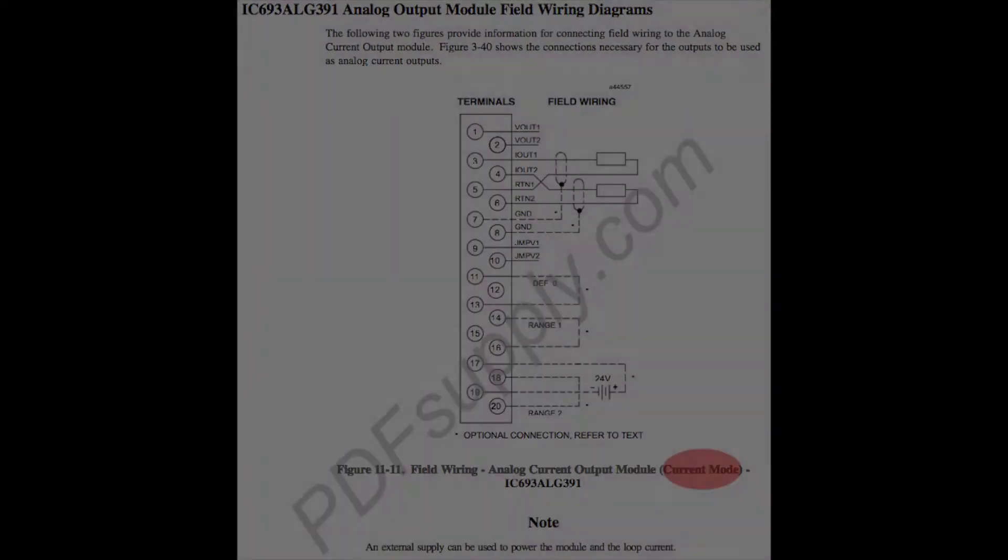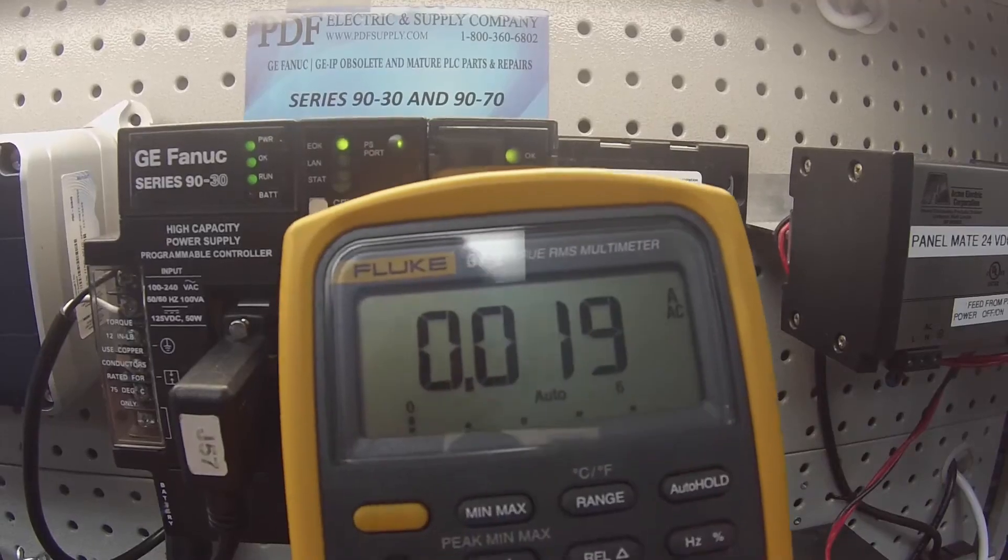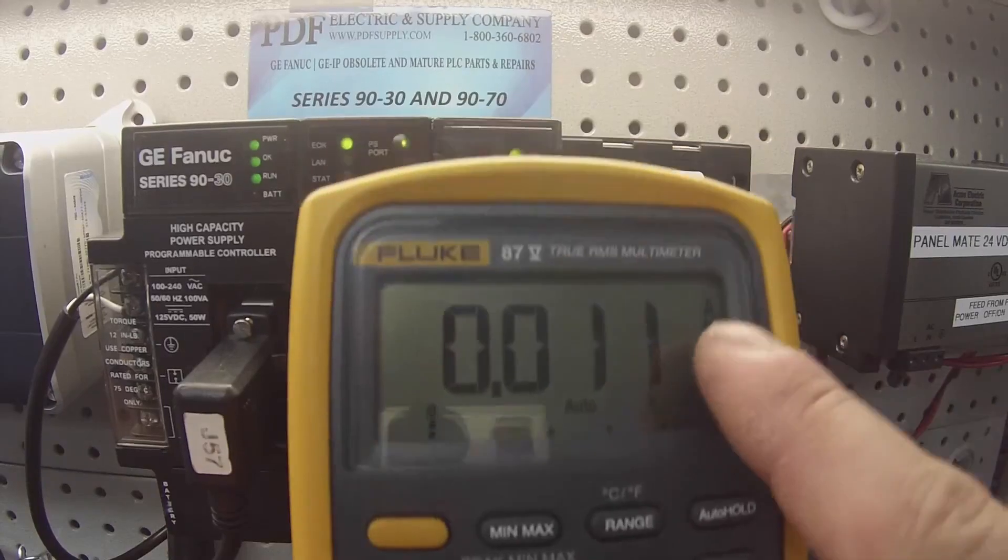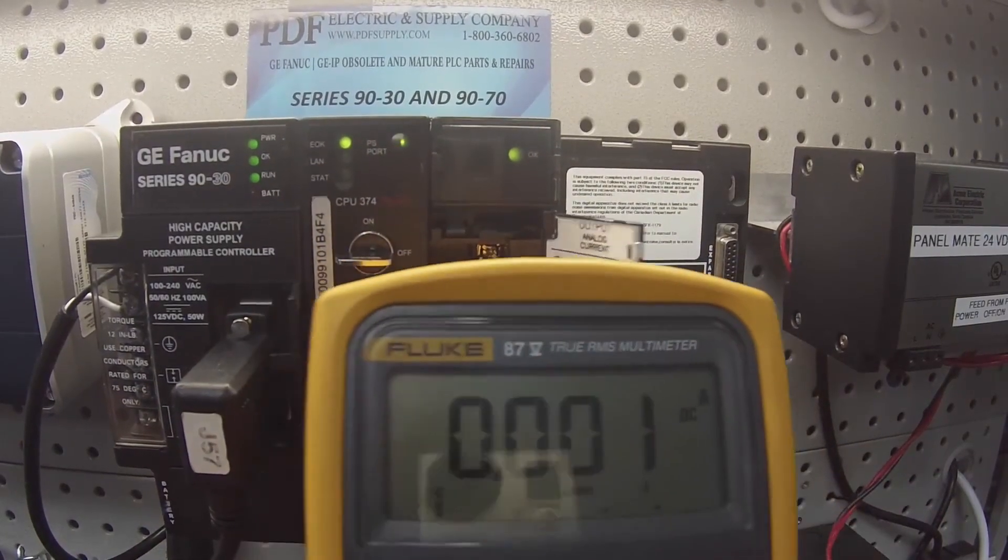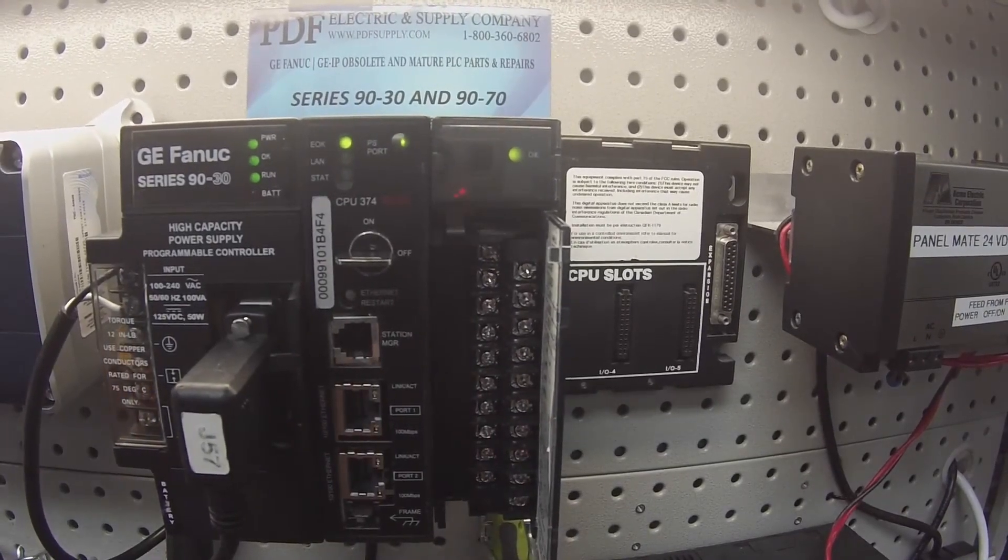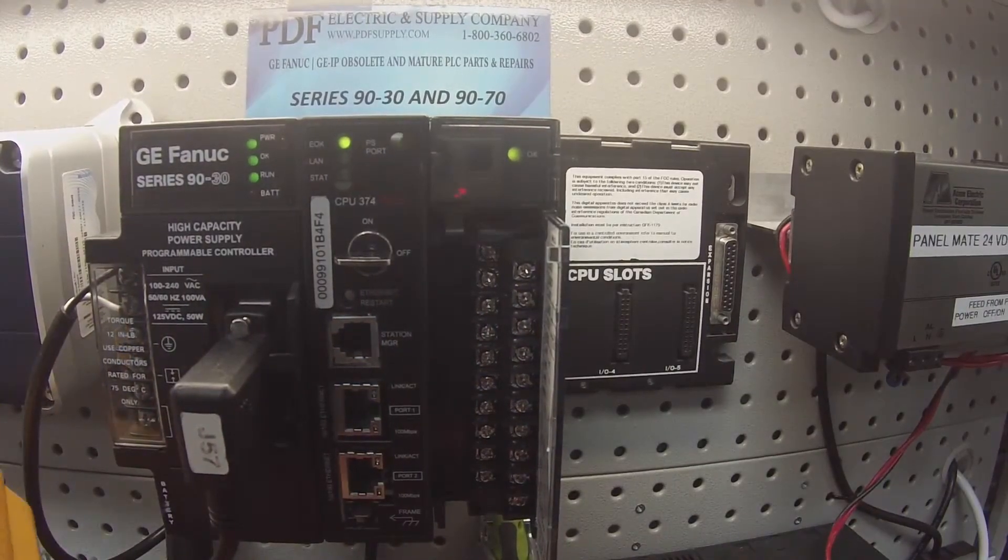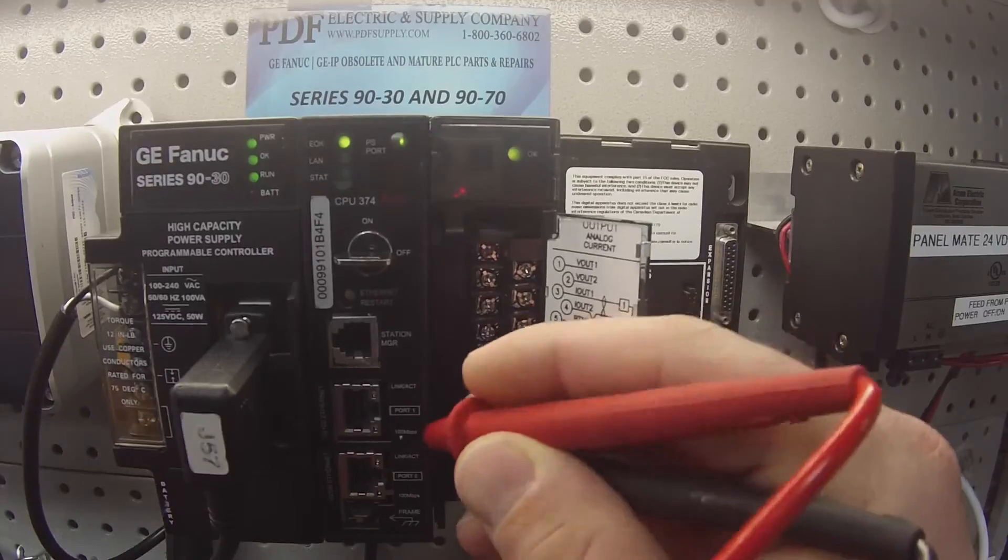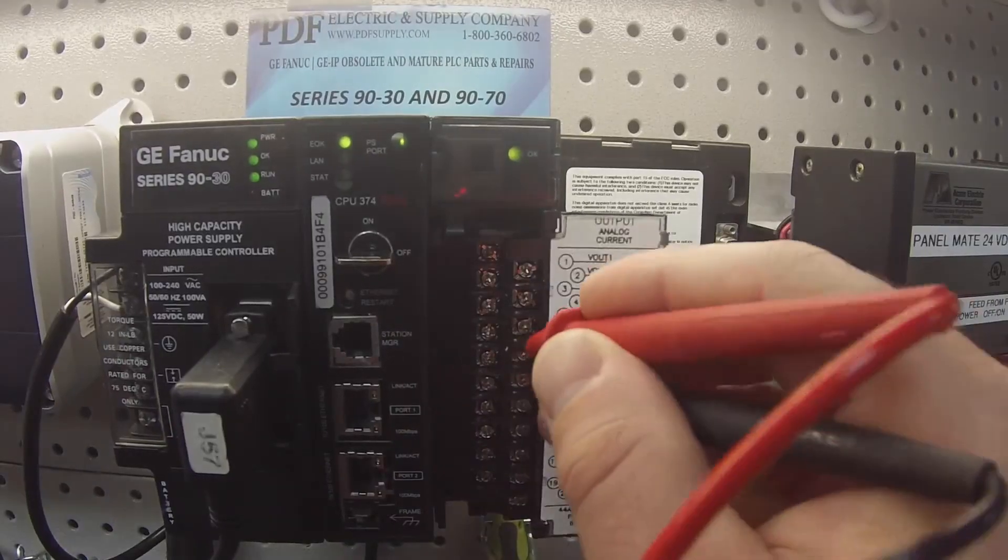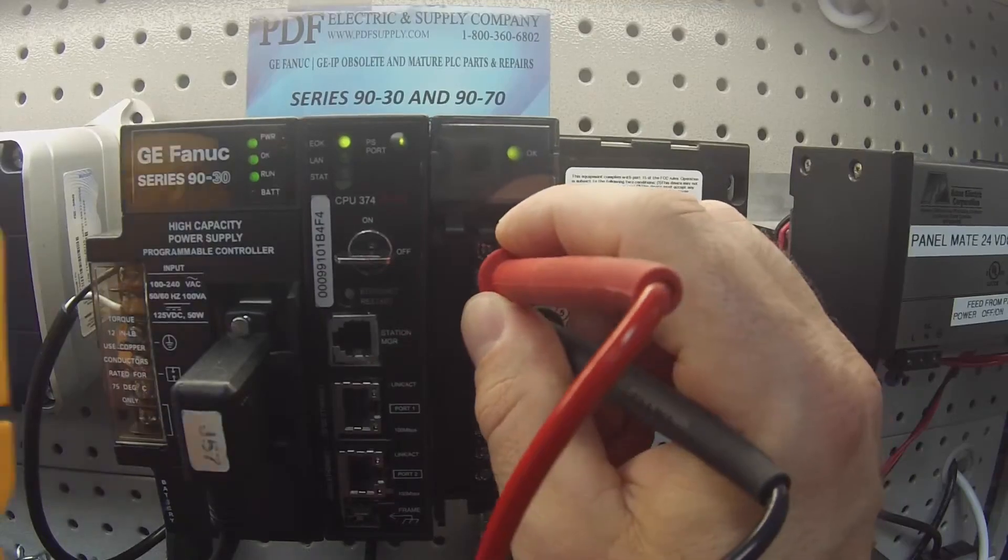So I'm going to take my multimeter and I'm going to choose to read milliamps. If you can see right here where my finger is. I'm also going to choose to change this to DC reading. And according to my wiring diagram, my two outputs are output number one is terminals three and five. So terminal three is positive, terminal five is negative. And I'm looking for a reading of about 20.